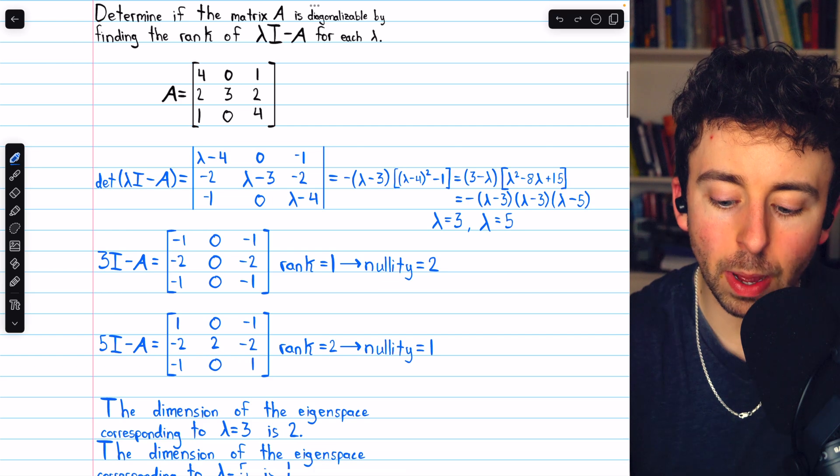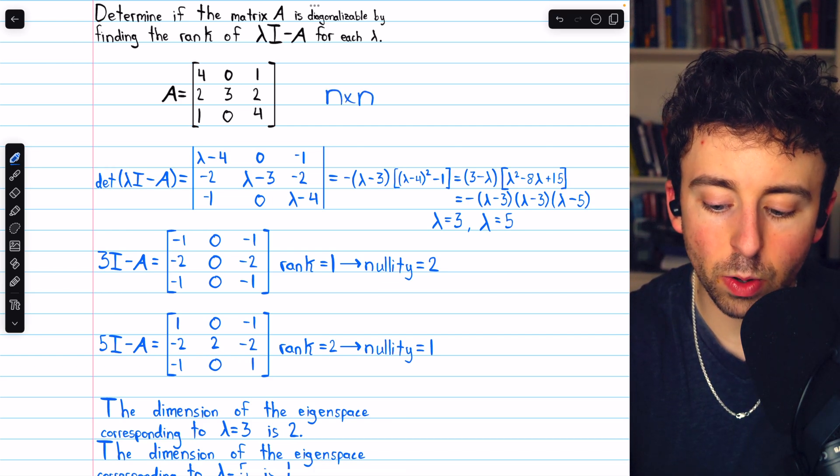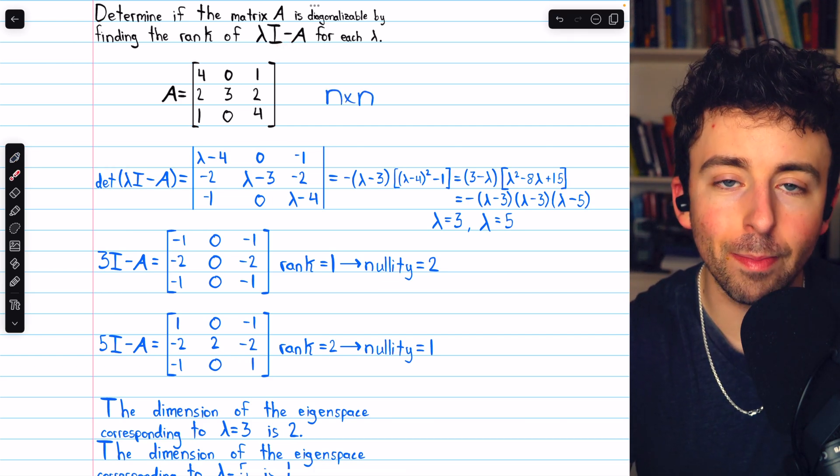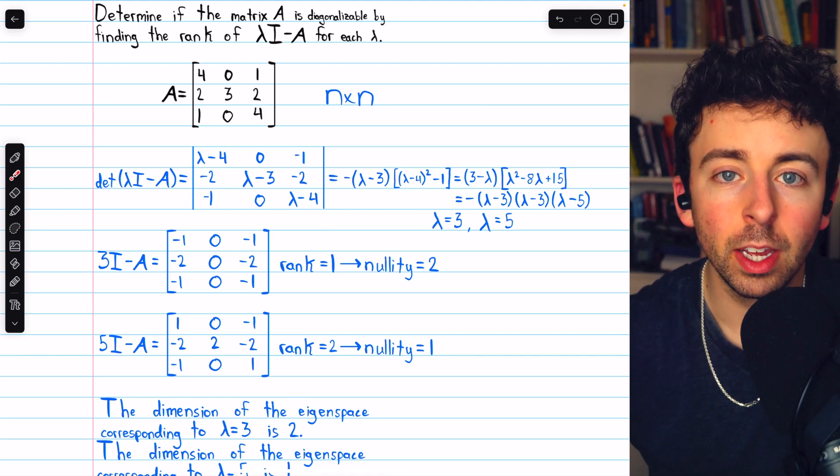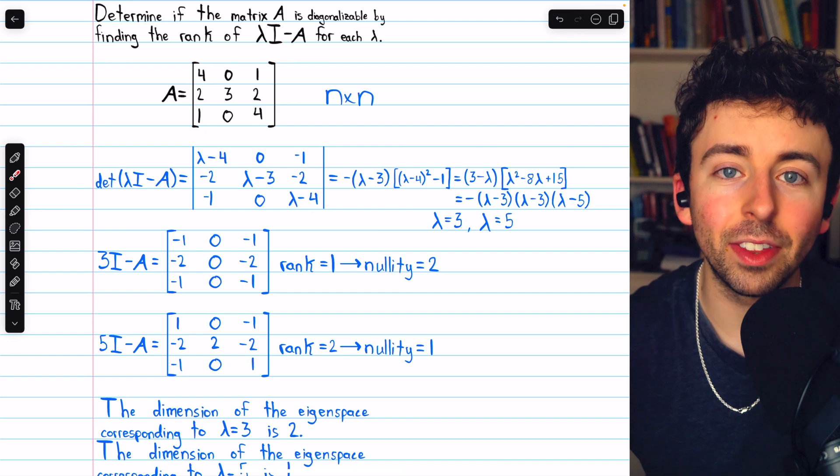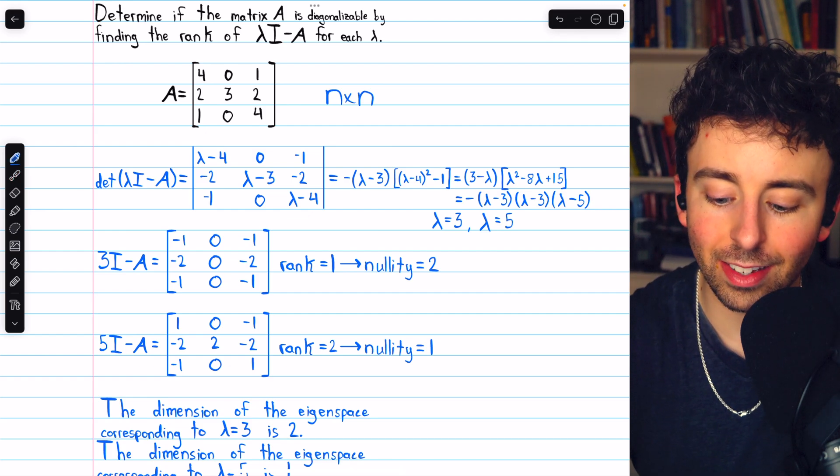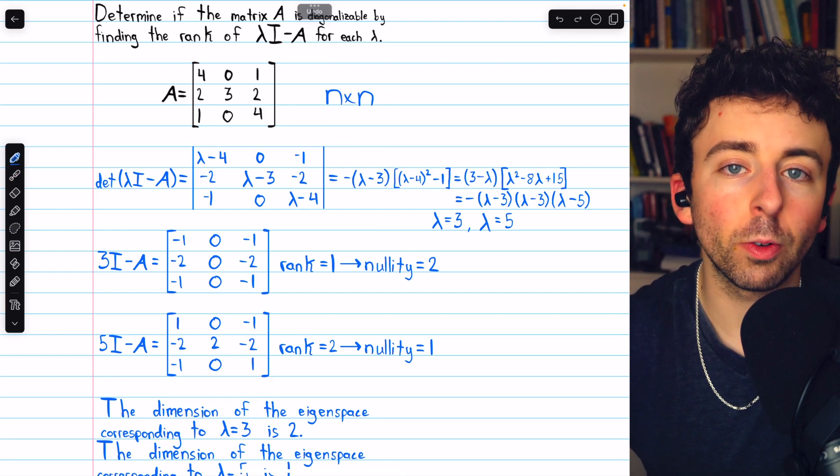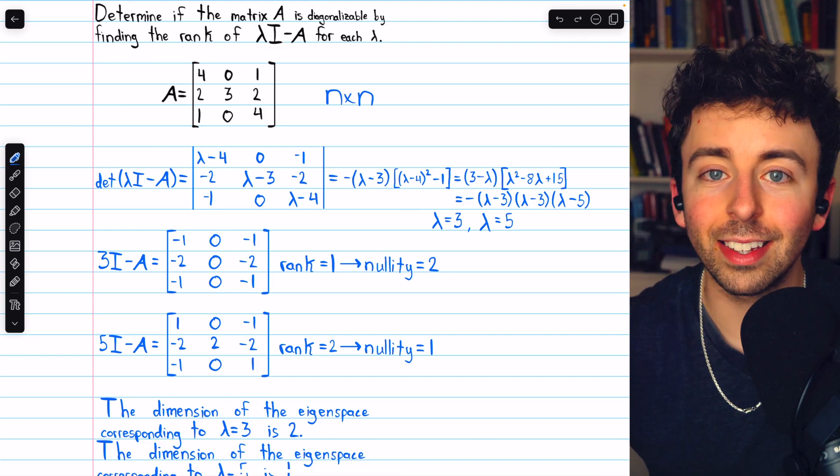So for an n by n matrix A, how do we use the rank of lambda I minus A to determine if A is diagonalizable? Well, just find the rank and use that to find the nullities. Then add the nullities together. If the nullities equal n, then yeah, the matrix is diagonalizable. Otherwise, it is not.